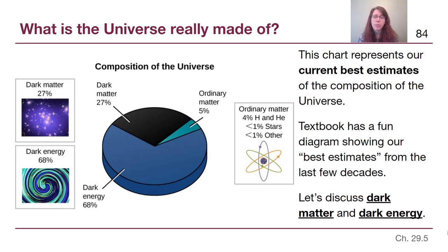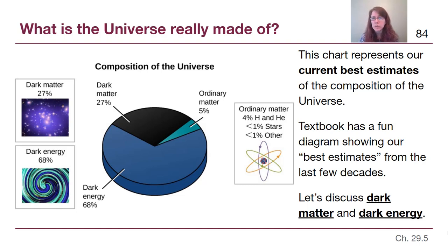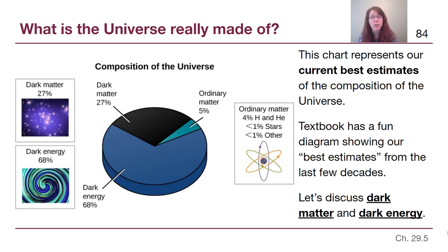This chart currently represents our best estimates for the composition of the universe, and it's really important to recognize that this has changed drastically over the last couple of decades. The textbook has a diagram showing what the best estimates looked like in previous decades. We aren't going to go into why those changes happened, but rest assured it's the scientific process in action — we come up with the best fit to our observations, and when new observations don't fit the model, we come up with a new model.